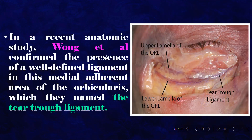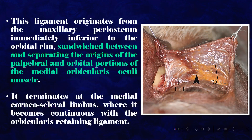In a recent anatomic study, Wang et al. confirmed the presence of a well-defined ligament in the medial adherent area of the orbicularis, which they named the tear trough ligament. This ligament originates from the maxillary periosteum immediately inferior to the orbital rim, sandwiched between and separating the origins of the palpebral and orbital portions of the medial orbicularis oculi muscle. It terminates at the medial corneoscleral limbus, where it becomes continuous with the orbicularis retaining ligament.